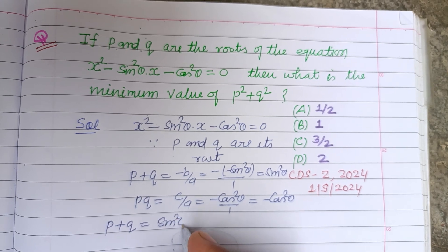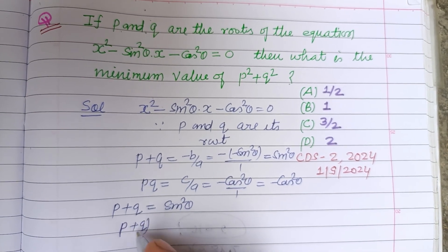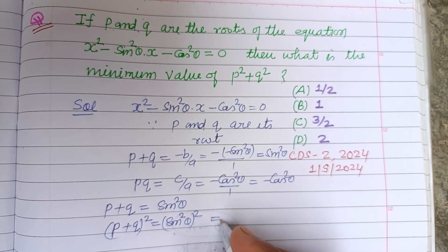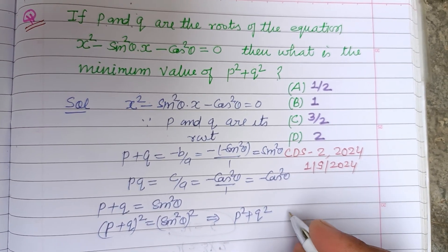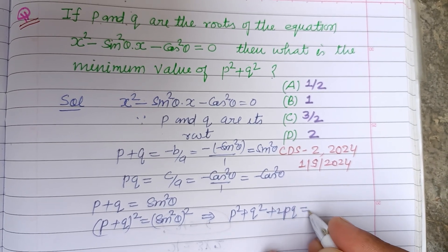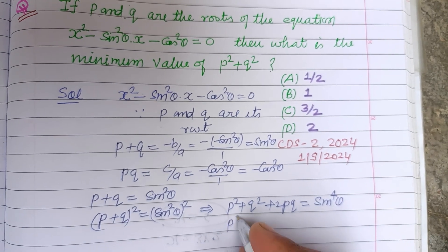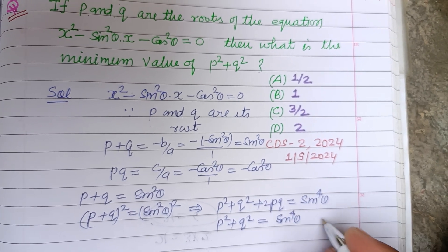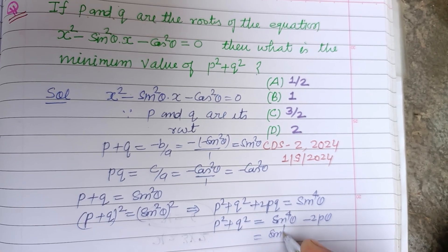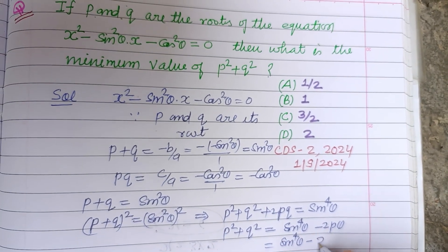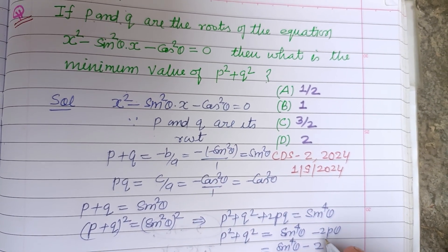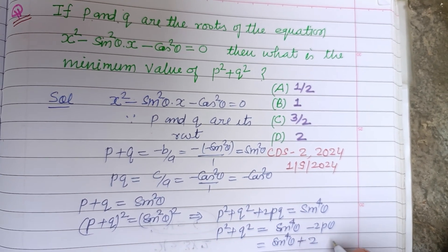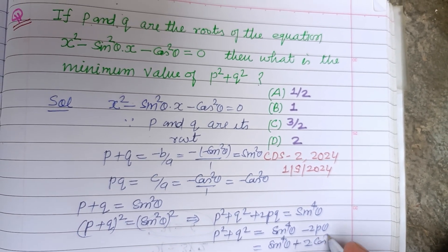We have p plus q equals sin²θ. Squaring both sides: (p + q)² equals sin⁴θ. Expanding: p² plus q² plus 2pq equals sin⁴θ. Therefore p² plus q² equals sin⁴θ minus 2pq. Substituting pq equals minus cos²θ, this becomes sin⁴θ minus 2 times (minus cos²θ), which gives sin⁴θ plus cos²θ.